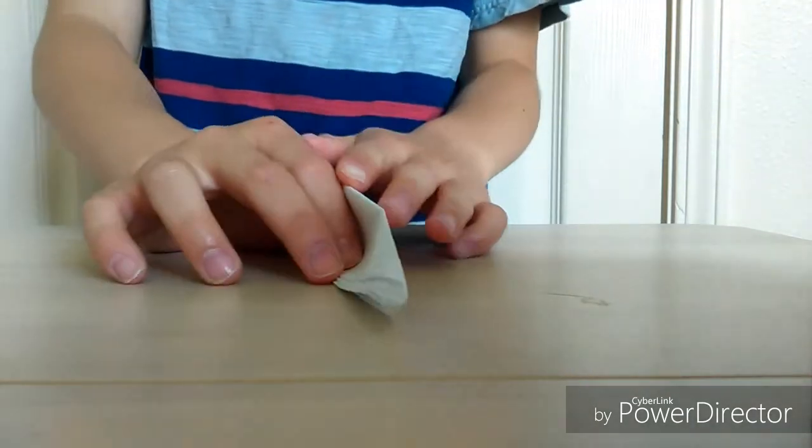Now the final step. After you've got one wing done, you have to make the second one. Do the same thing on the other side.